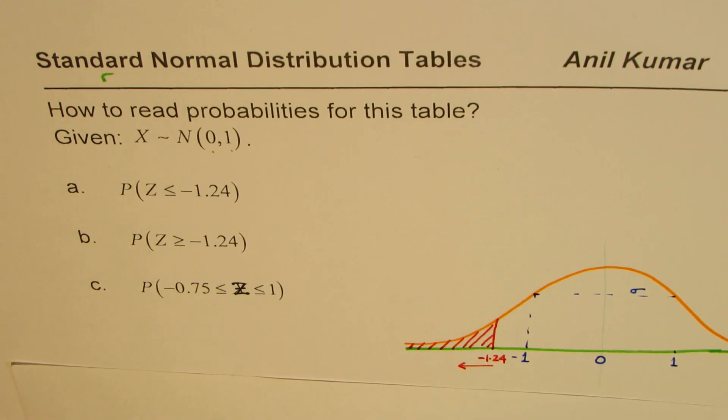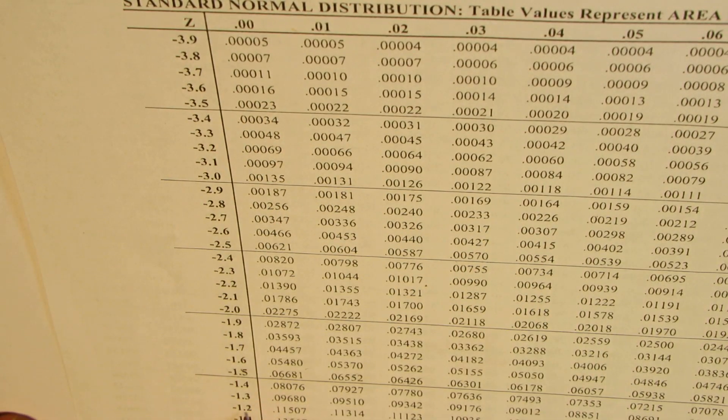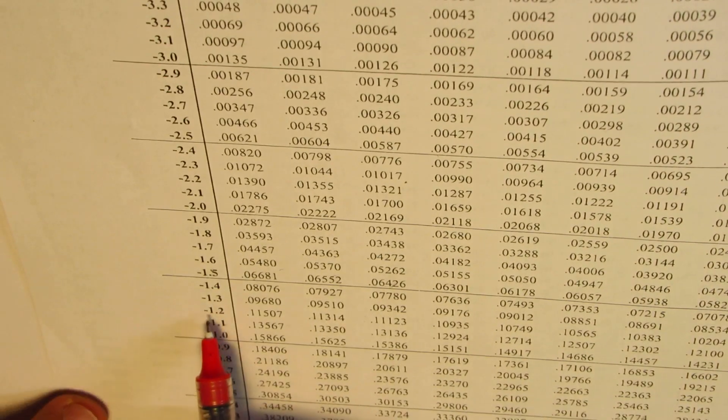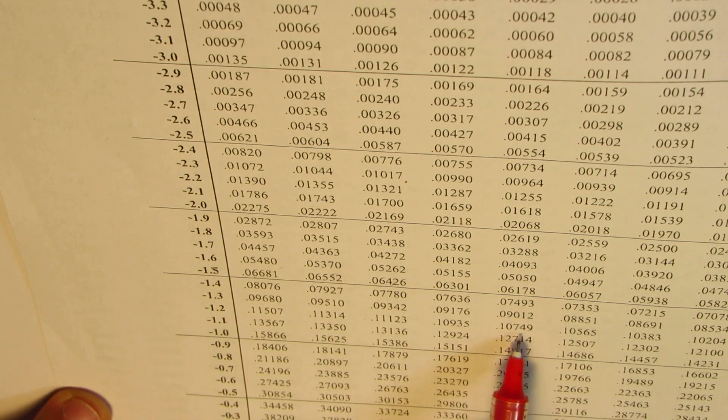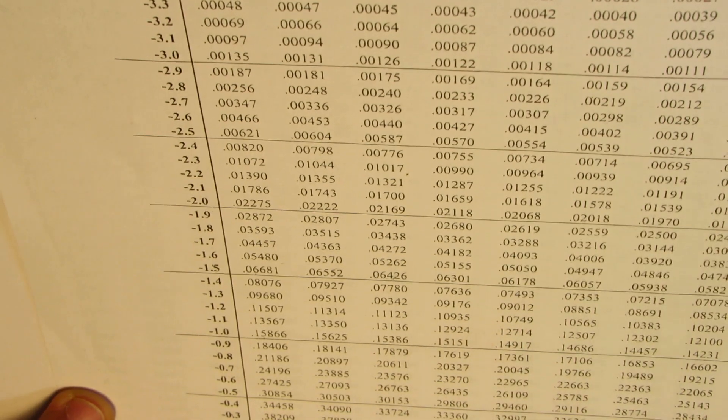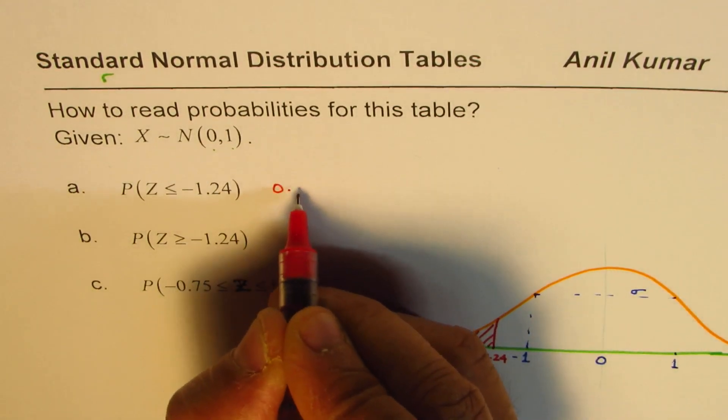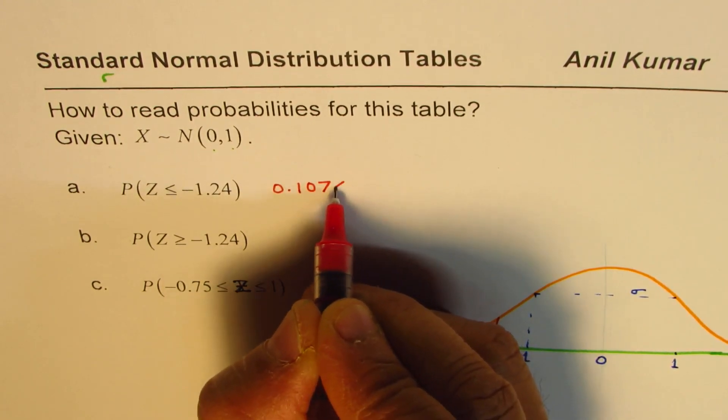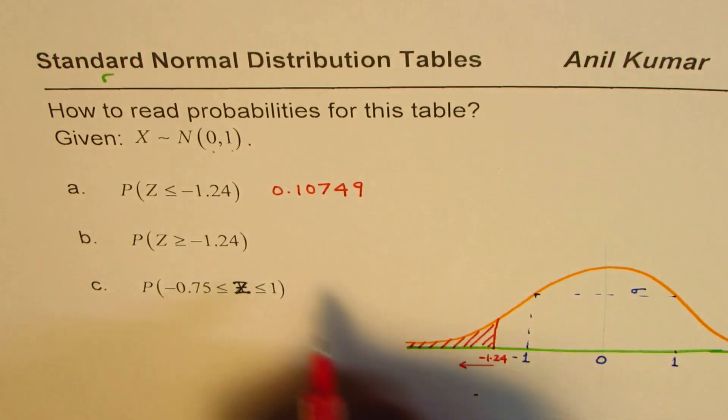So it is minus 1.24. So we go to one decimal place on the z-column, which is minus 1.2, and then 4. This is 0, 0, 0, 1, 0, 2, 0, 3, 0, 4, and the value is 0.10749. So 0.10749. So that is the value which we get here. So that is the answer.